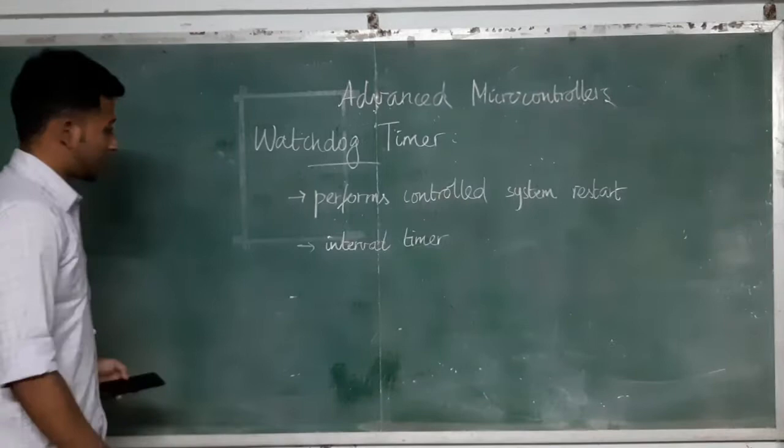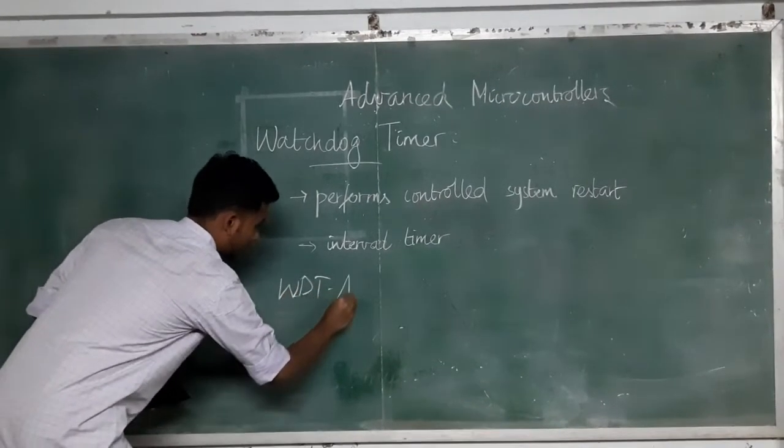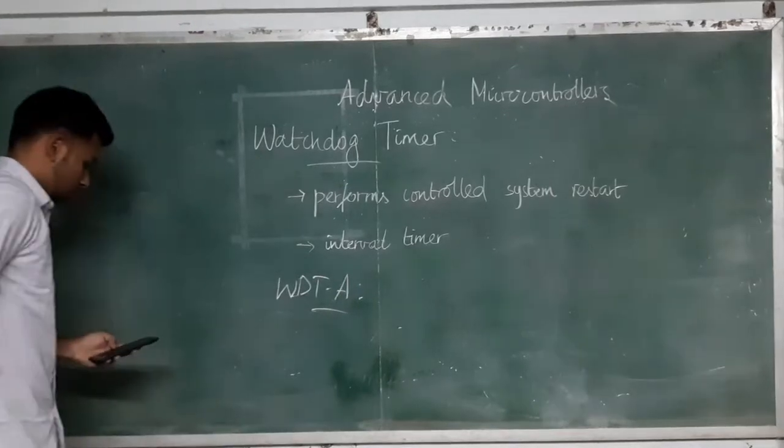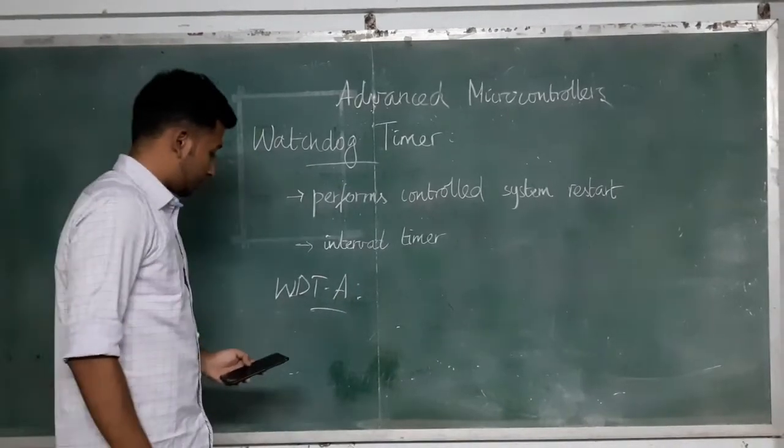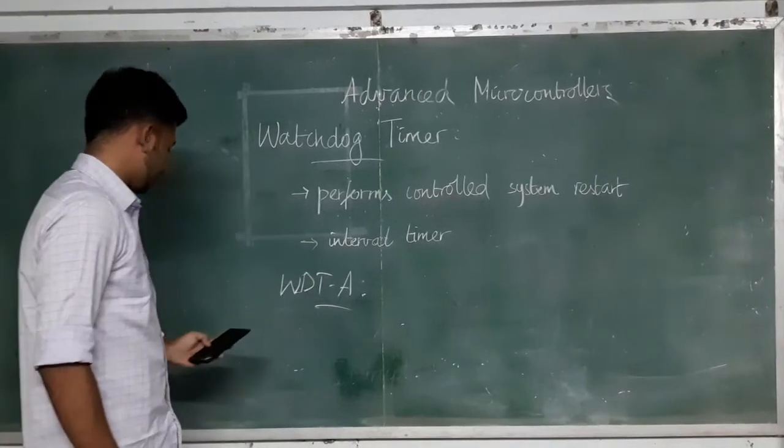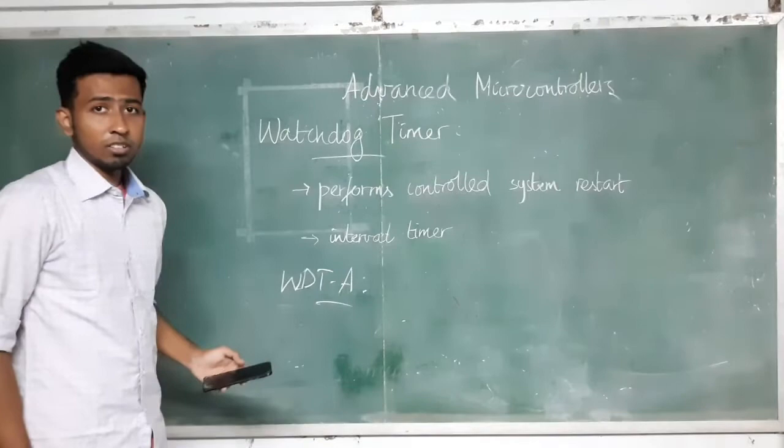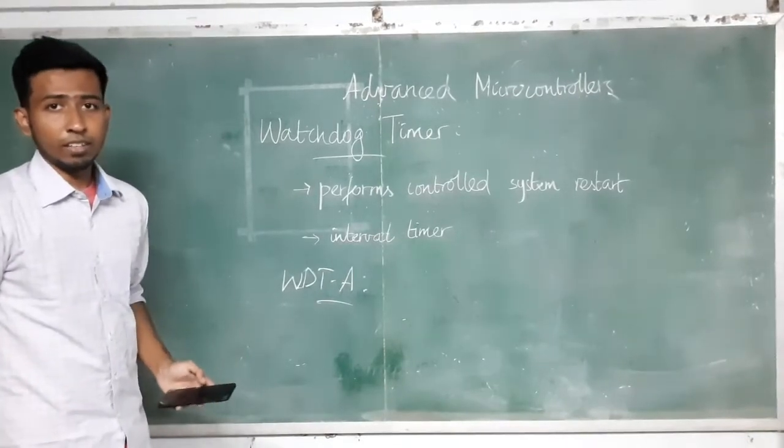Now we will see the watchdog timer A operation. As I said earlier, it can either act in watchdog mode or as an interval timer. To switch between these two modes, we use the watchdog timer control register, that is the WDTCTL register.